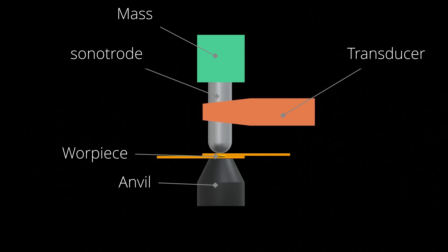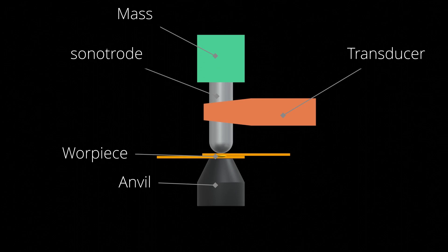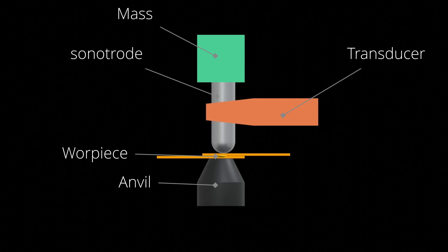As demonstrated visually in the video, the combined effects of vibrations and pressure play a crucial role. They result in movement of the molecules within the metal, disrupting surface oxides. This action significantly reduces the surface resistance of the alloys involved.